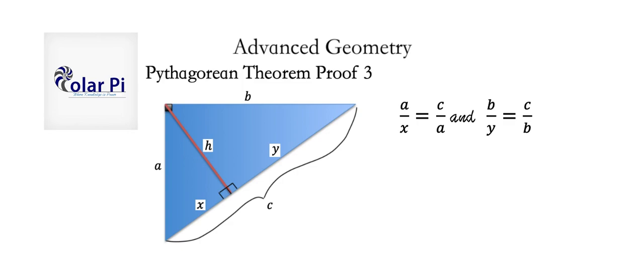From this, notice that we can cross-multiply in the first equation and write that a squared is equal to c times x, and in the second equation, we can write b squared is equal to c times y. So, now what happens if we add a squared and b squared?